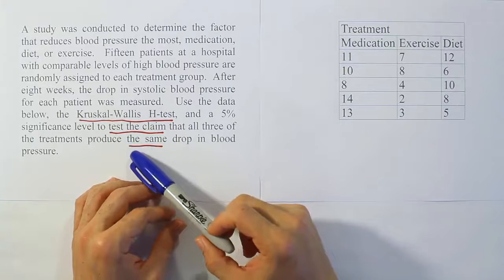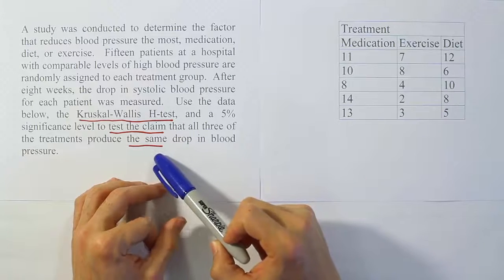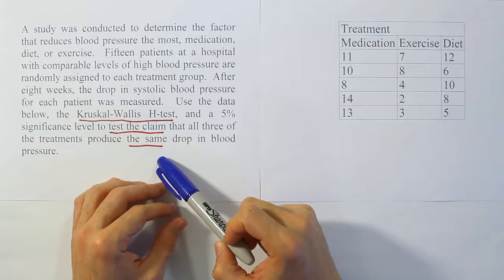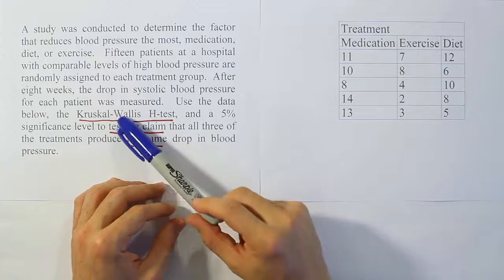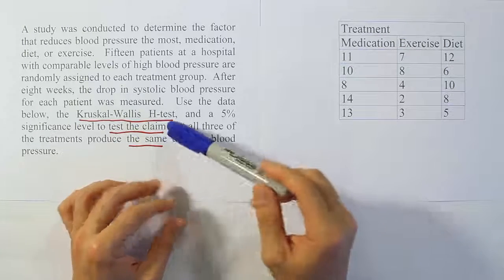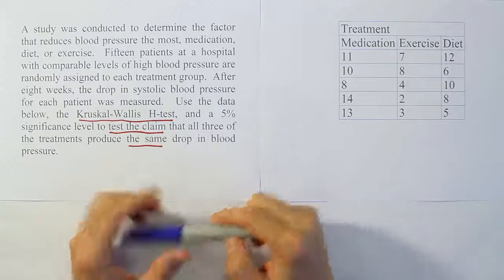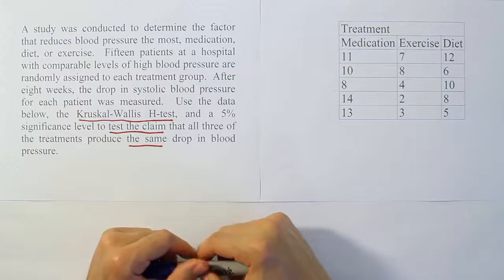There are five patients assigned to each treatment and each person only undergoes one of the treatments. What they want to do is test the claim that all three have the same drop in blood pressure. Normally we would use the ANOVA CRD on this type of problem, but now we're going to use the Kruskal-Wallis H-Test, which is a non-parametric procedure and an alternative to the ANOVA CRD experiment.